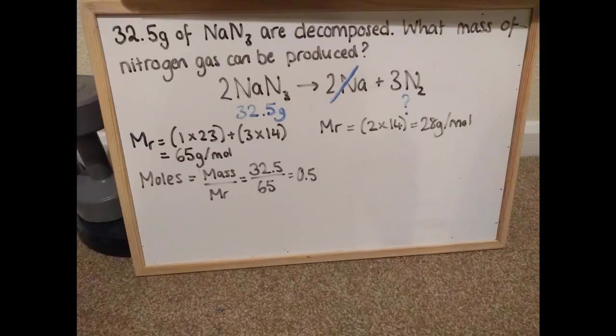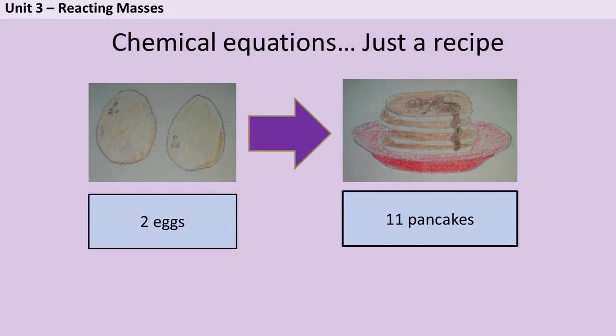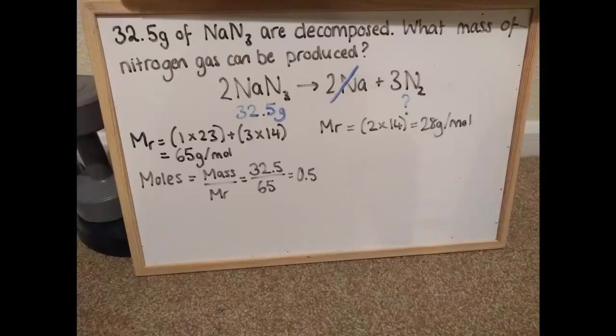Now I need to go back to my recipe and find out how much of the nitrogen that's going to make. In my example at the beginning I knew that two eggs could be used to make 11 pancakes. What these coefficients in the balanced symbol equation tell me is that two moles of sodium azide can be used to make three moles of nitrogen. So in other words I've got 50% more nitrogen.